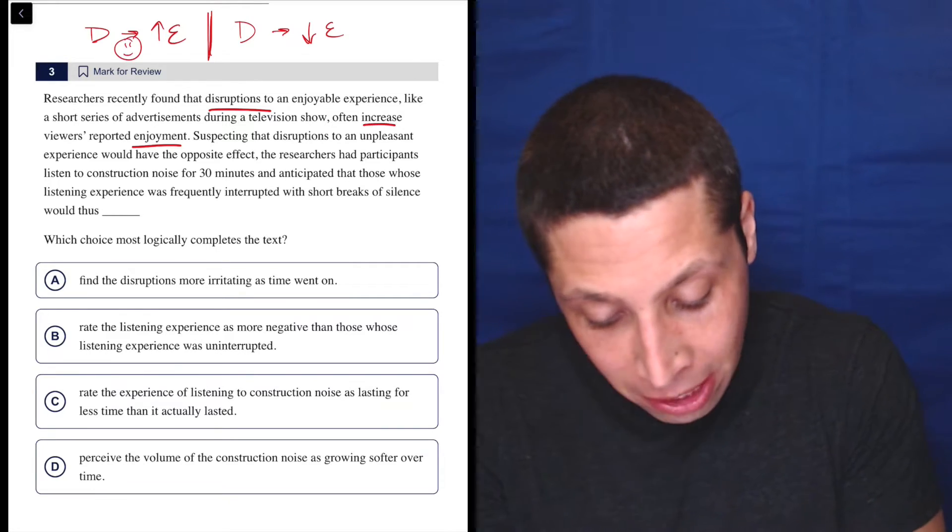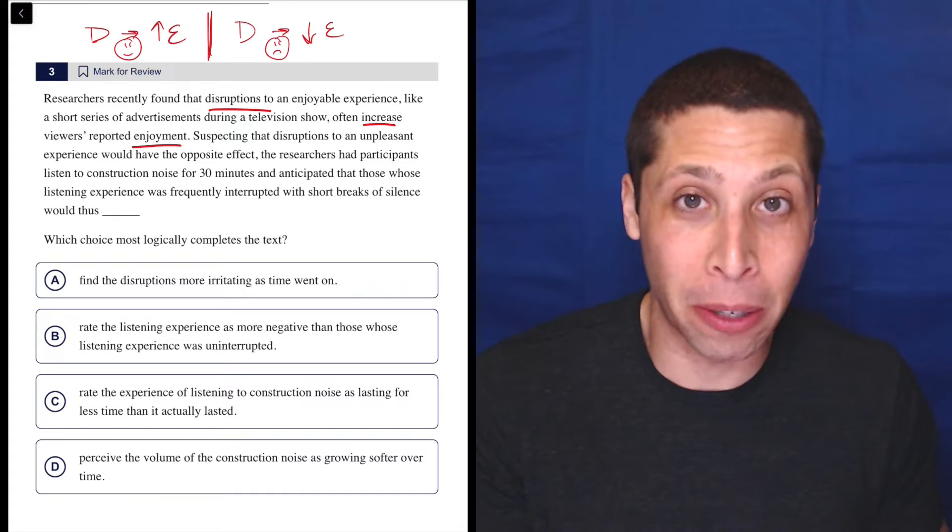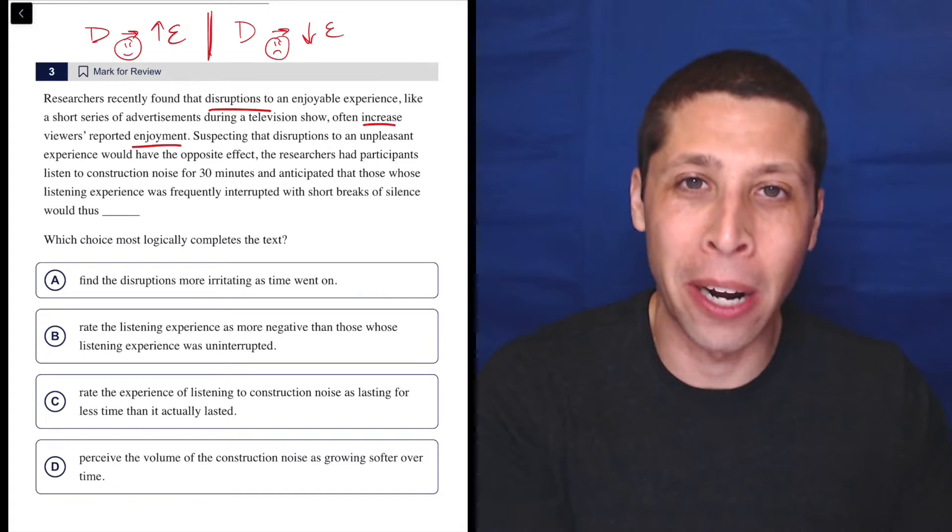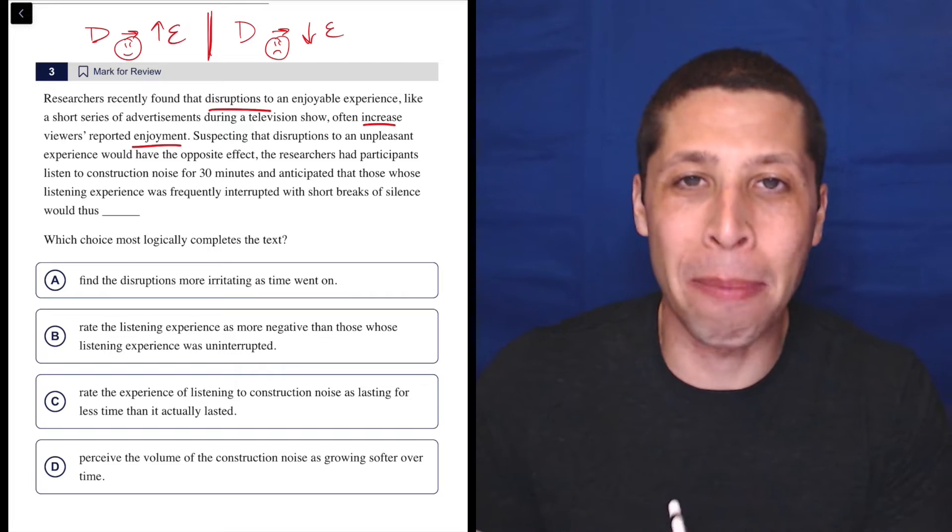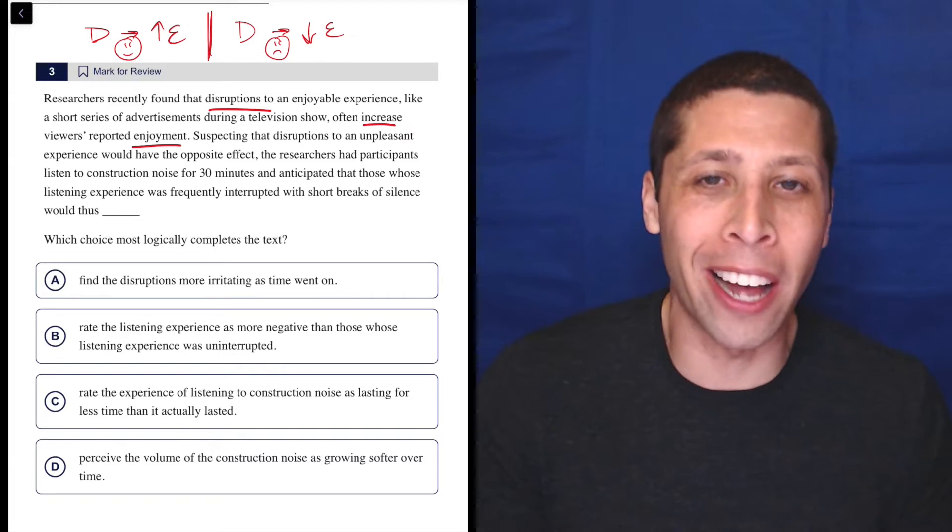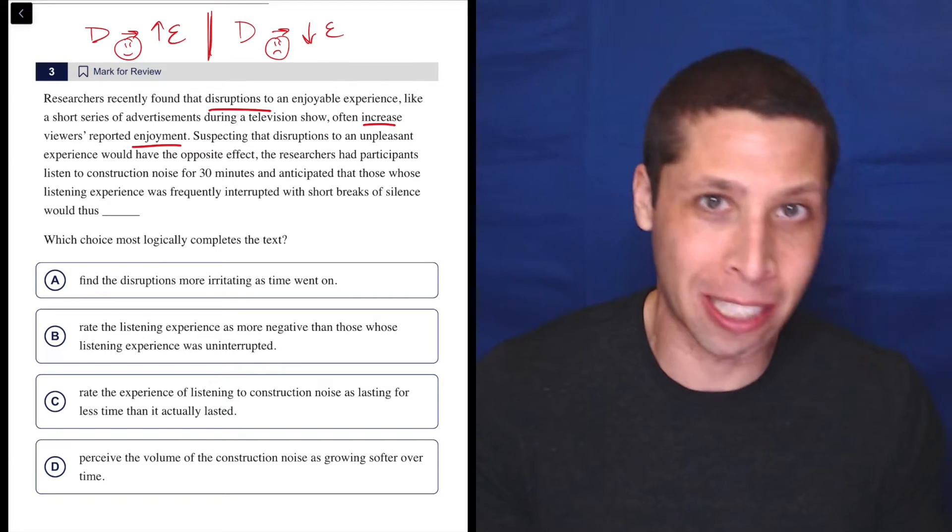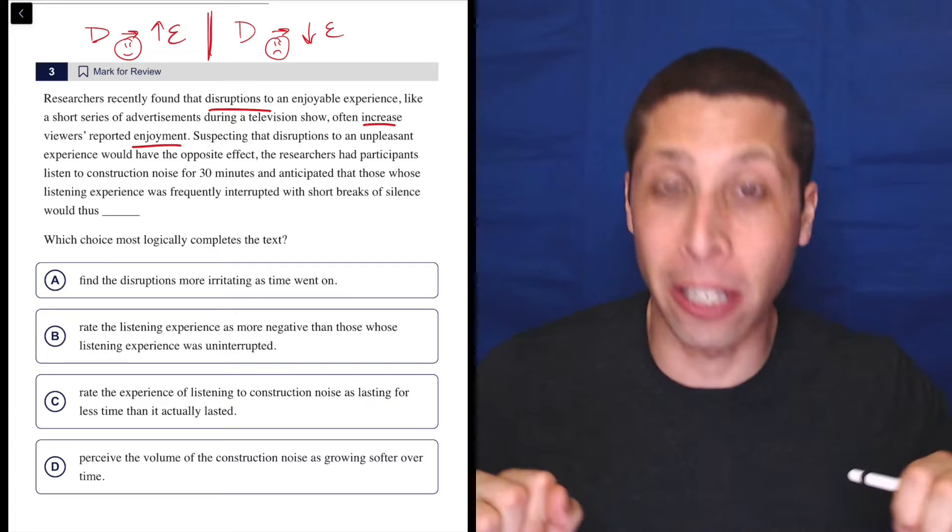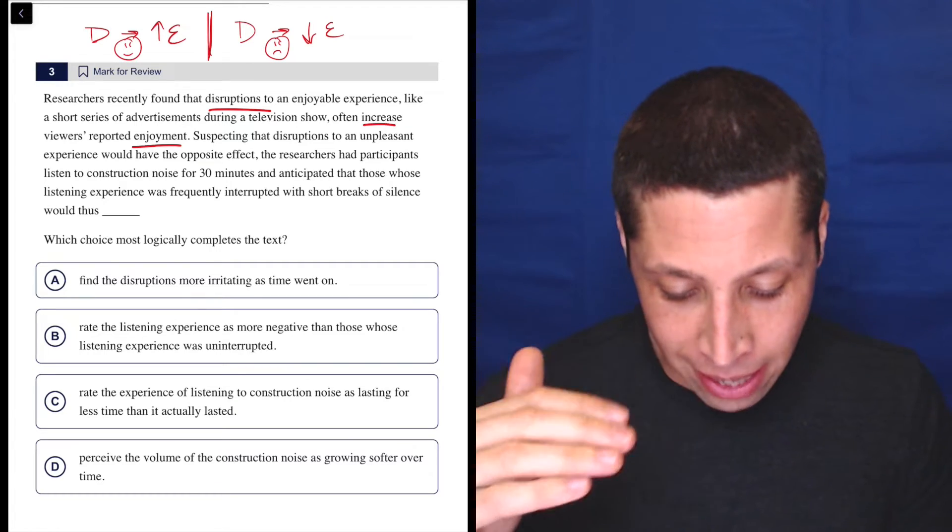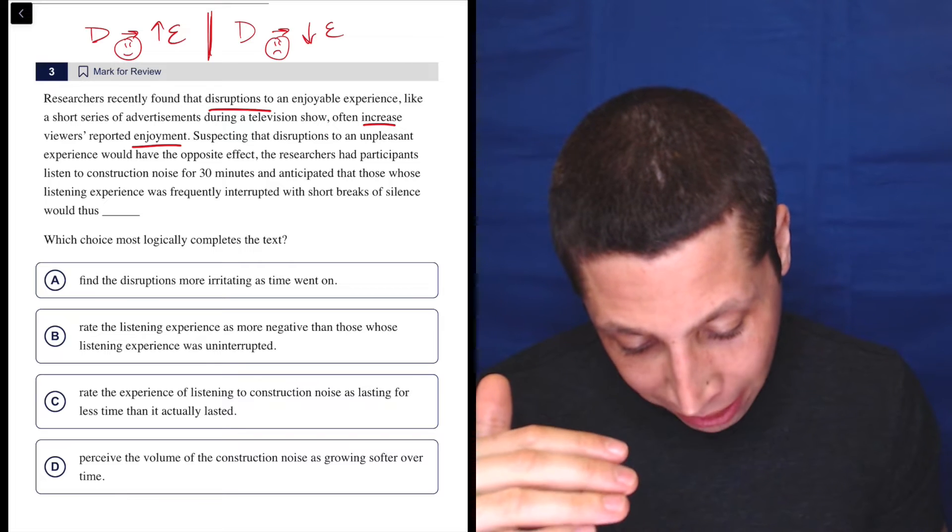They were talking about a pleasant experience here. Here they're talking about a bad experience. So this is the benefit of using the scratch paper as opposed to the annotations in the Blue Book app is you can draw smiley faces. You can do whatever you want. And it's much easier to just be flexible than it is typing on a computer and a keyboard. Disruptions would decrease the enjoyment.